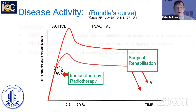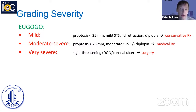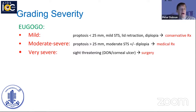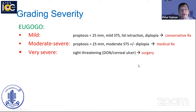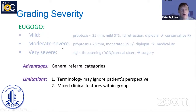Only once the disease has stabilized do we usually consider surgical rehabilitation, although the exception is in cases where vision is threatened from corneal breakdown or optic nerve compression, where surgery may be offered even early in the active phase. It's important to determine not only the severity of different clinical features but also the course of the disease. The common grading system used, particularly amongst endocrinologists, is the European Group on Graves' Orbitopathy (EUGOGO) system, grading mild, moderate, severe, and very severe based largely on treatment categories.